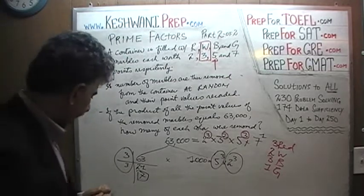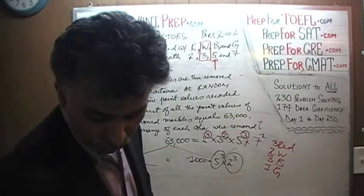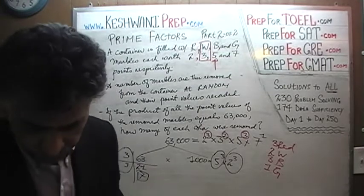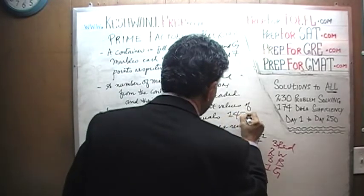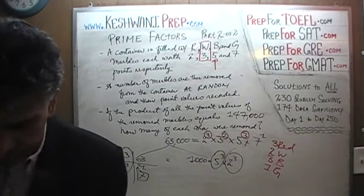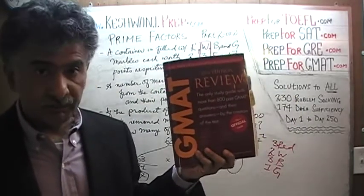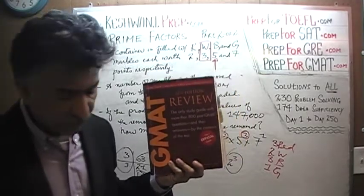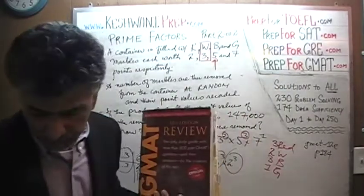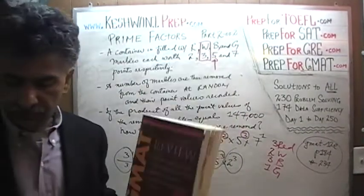Let's do one more for extra practice. The problem is going to remain the same — I want you to pause the video, do it yourself, and then compare your work. The only thing we're going to change is the number: instead of 63,000, let's make it 147,000. This is the exact same problem that appeared in the 12th edition of the GMAT, on page 184, as problem number 234 — towards the very end of the problem-solving questions, and they considered it a hard question.